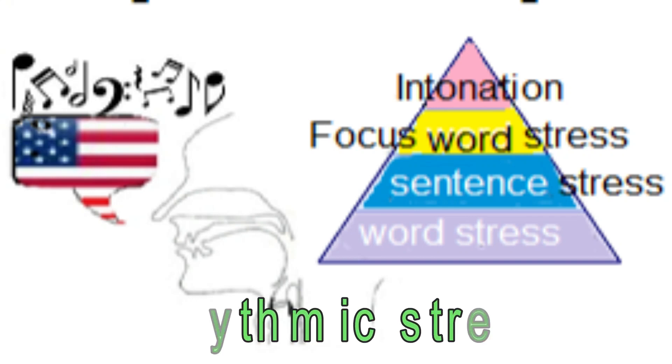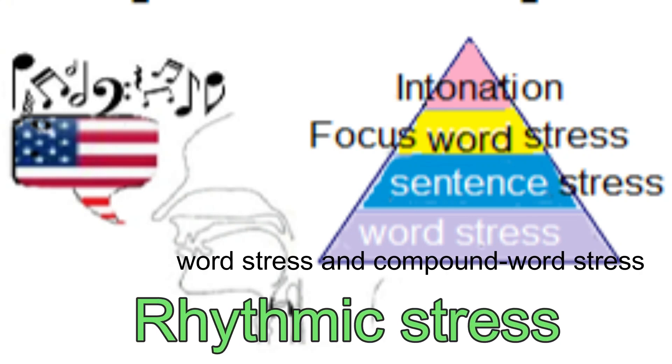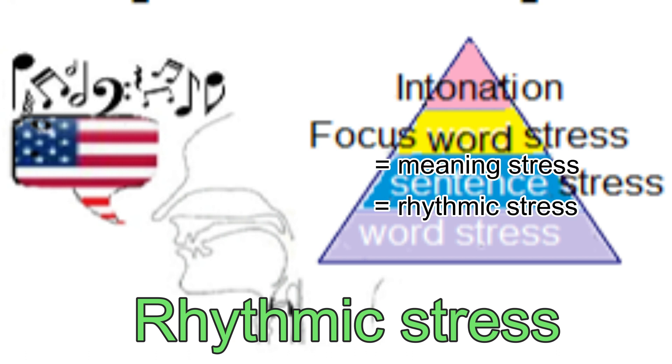Rhythmic stress. In the previous two chapters, we learned word stress and compound word stress. Based on this foundation, we move on to the next levels of stress. When words are used in sentences, higher levels of stress occur, which are rhythmic stress and meaning stress.